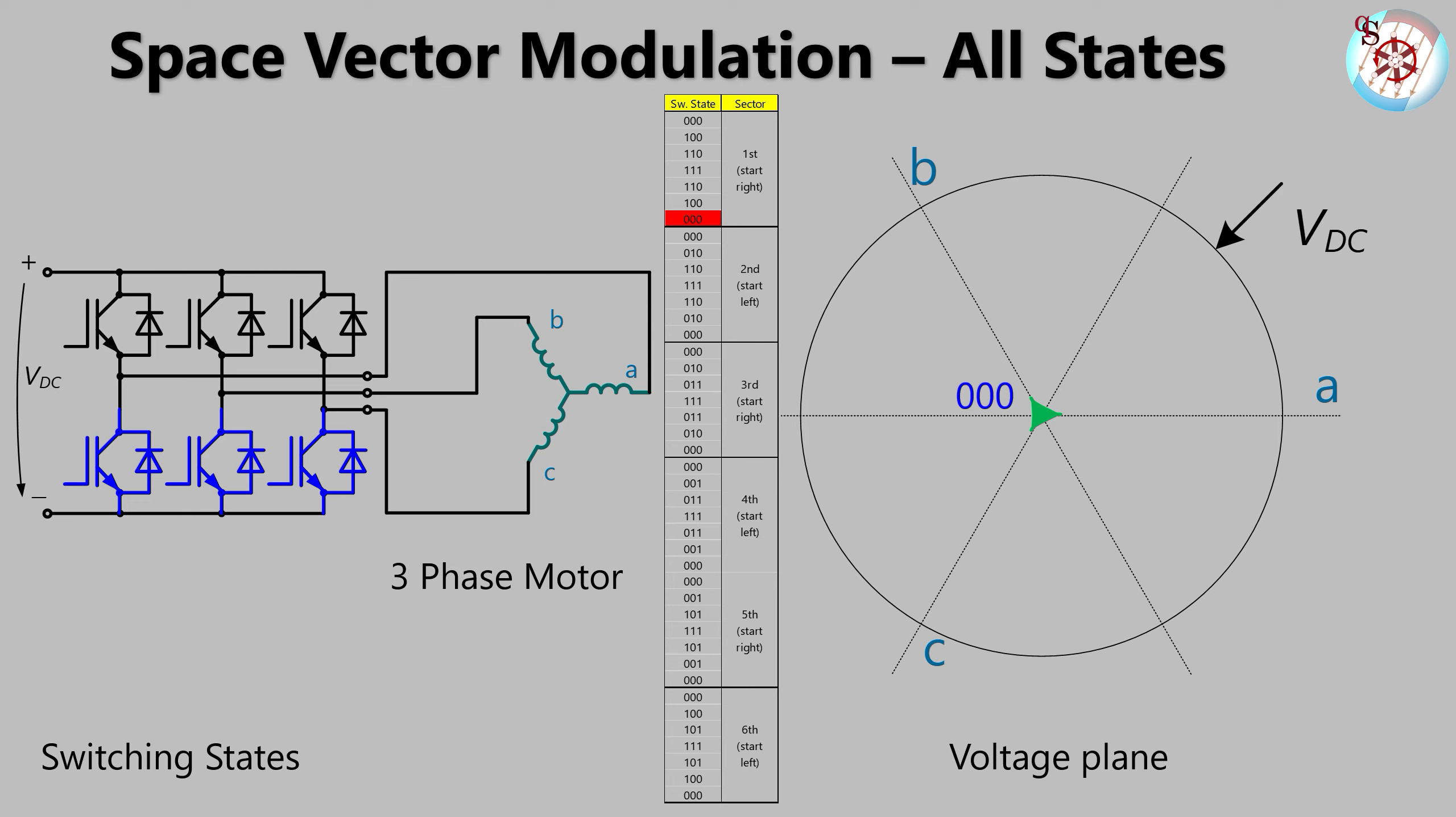Now we are in transition state triple zero. From here we could go to any sector, but that wouldn't make much sense because we want to produce a continuously rotating voltage space vector. That is why we enter sector two after sector one. Since it is a start left sector, we start with zero one zero. The rest shouldn't be rocket science. Just watch the full walkthrough.